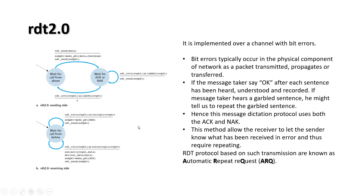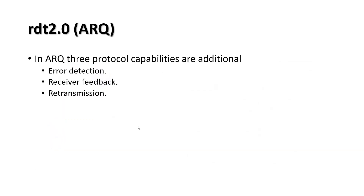In RDT 2.0, some new things are added which were not present in RDT 1.0. These three new capabilities added are: error detection, receiver feedback, and retransmission.